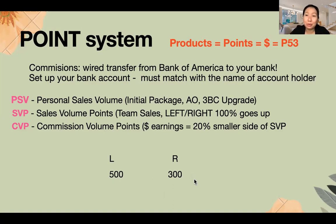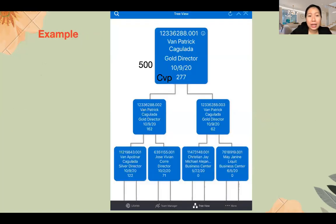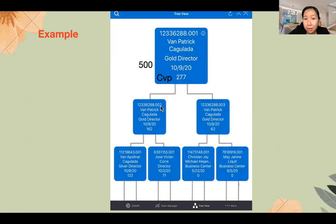In your USANA Hub app, you'll see your CVP number at the bottom — that's your income in dollars. If you have three business centers, each one has its own CVP. For example, if BC1 has $277, BC2 has $162, and BC3 has $62, your total income is $277 + $162 + $62. That's why three business centers gives you double to triple income.